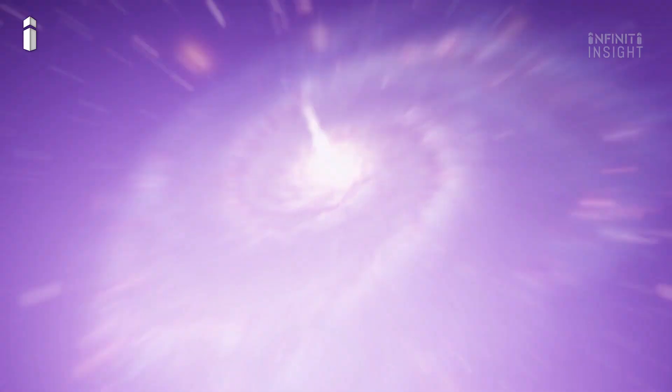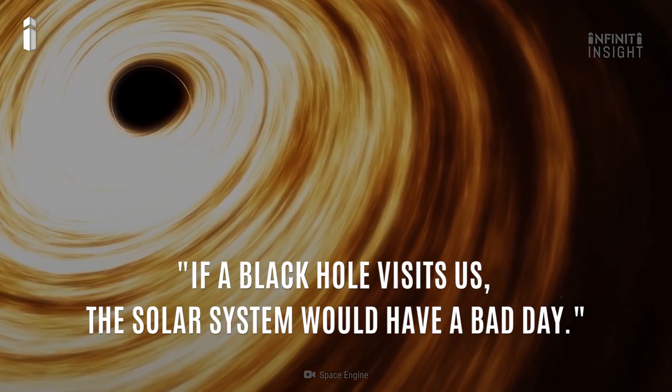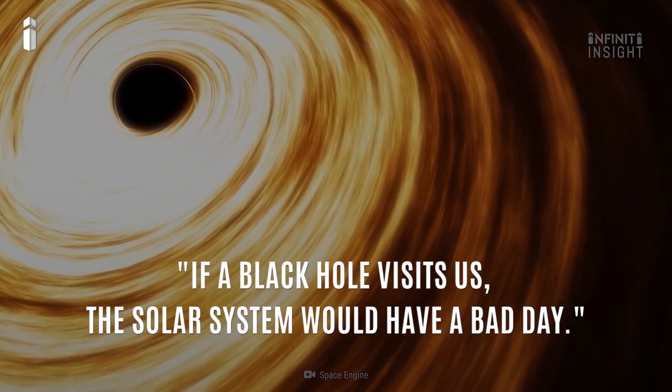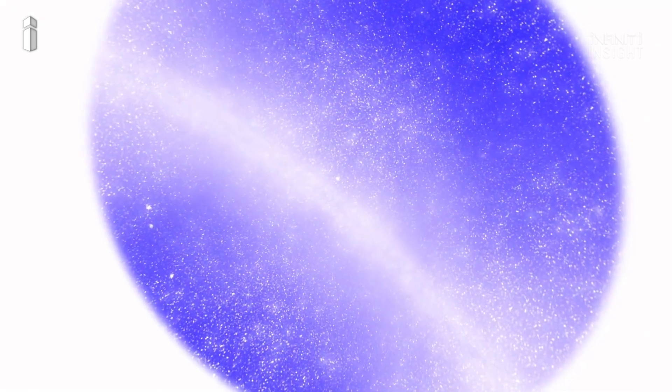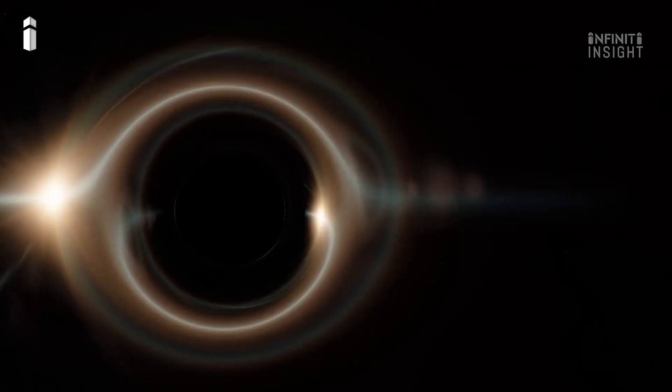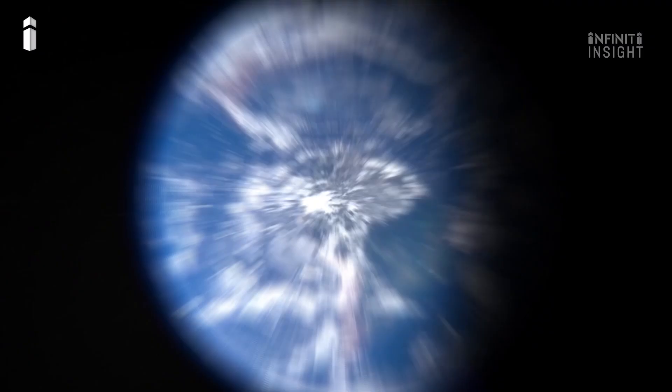The famous astrophysicist Neil deGrasse Tyson put it briskly that if a black hole visits us, the solar system would have a bad day. After all, there is hardly anything worse than the ability to be broken into atoms. But we are used to thinking that black holes are somewhere far away, in other parts of the universe. But what if one of them literally appears on our doorstep?